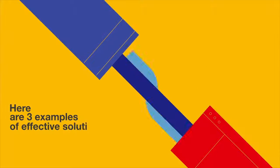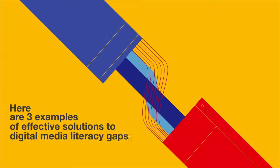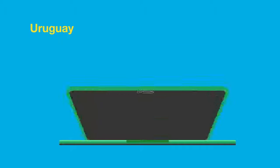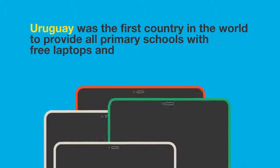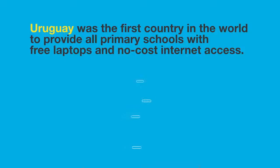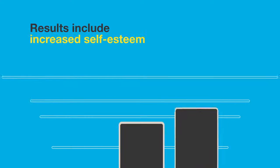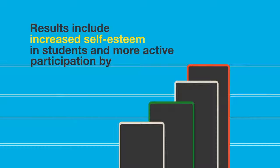Here are three examples of effective solutions to digital media literacy gaps. Uruguay was the first country in the world to provide all primary schools with free laptops and no-cost internet access. Results include increased self-esteem in students and more active participation by parents.